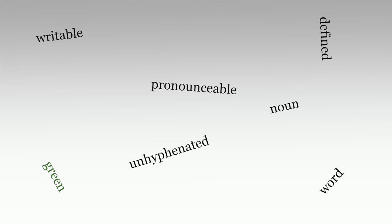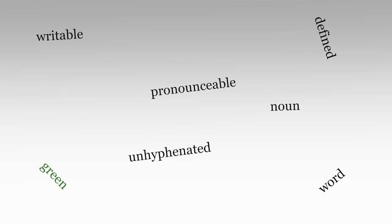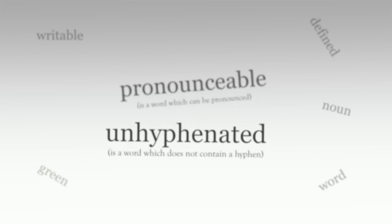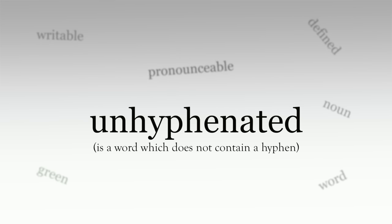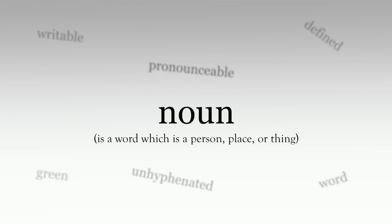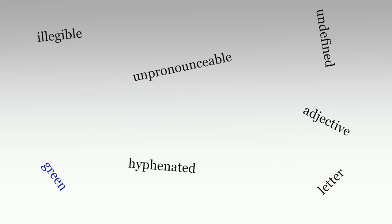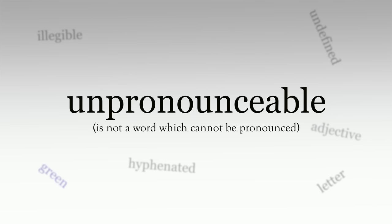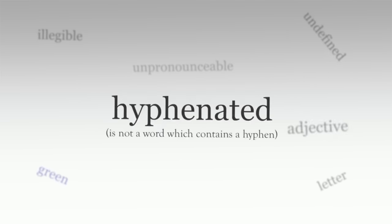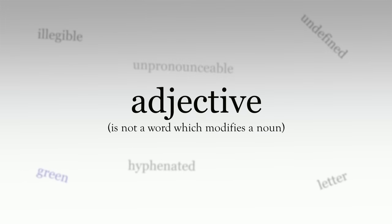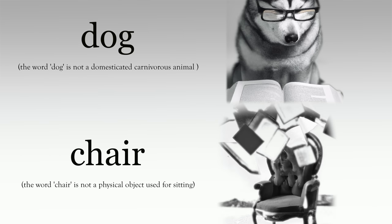Other examples of autological words include pronounceable, unhyphenated, noun, etc. Their heterological counterparts would be unpronounceable, hyphenated, adjective, and so on. Words less related to language, like dog or chair, obviously don't describe themselves, and so also fall under the heterological category.